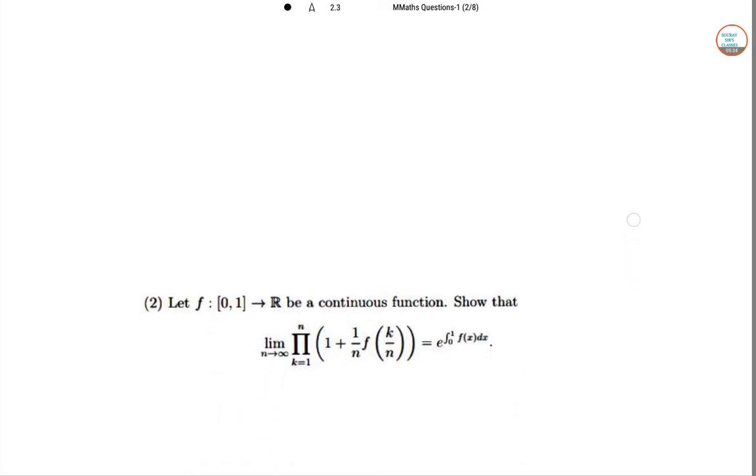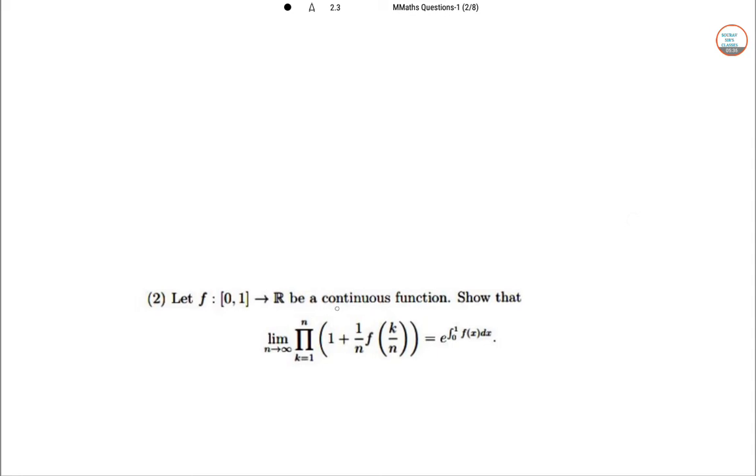So let [0,1] belongs to R be a continuous function. We need to show this. So F is a function which is bounded [0,1]. Bounded from both side.